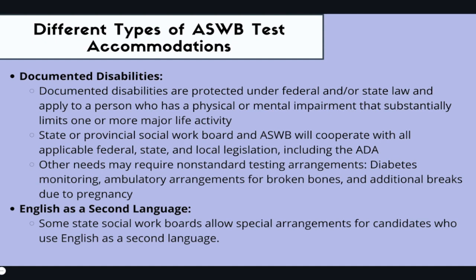There are different types of ASWB test accommodations, and this comes directly from the ASWB. You will need some sort of documented disability to qualify for a test accommodation. Documented disabilities are protected under federal and state law — all you need documentation of is that you have a physical or mental impairment that limits one or more major life activities. You will fill out the accommodations form with a healthcare or mental health provider, and the ASWB does cooperate with federal, state, and local legislation, including the Americans with Disabilities Act.